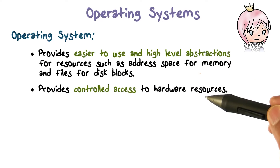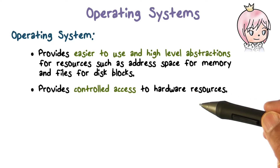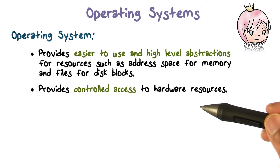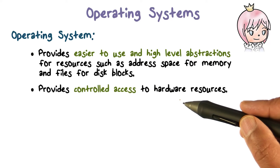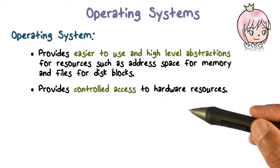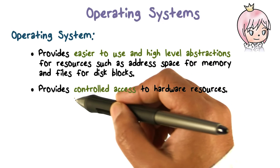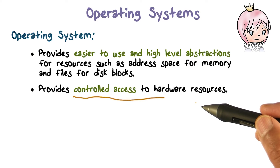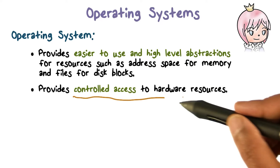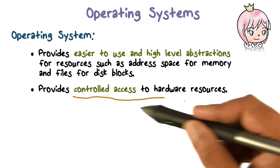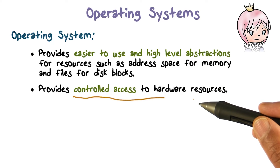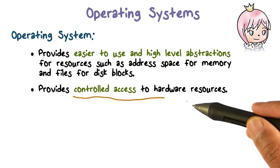The high level resources that the operating system makes available to applications are going to be implemented using the real physical resources that the hardware provides to us. The physical resources are going to be shared across these different applications. When you have that kind of sharing, we need to access those resources in a controlled fashion. So the hardware resources are actually managed by the operating system, and access to those is going to be controlled via it as well. That is one of the fundamental reasons why operating systems have such an important role to play when it comes to protecting resources and securing access to them.